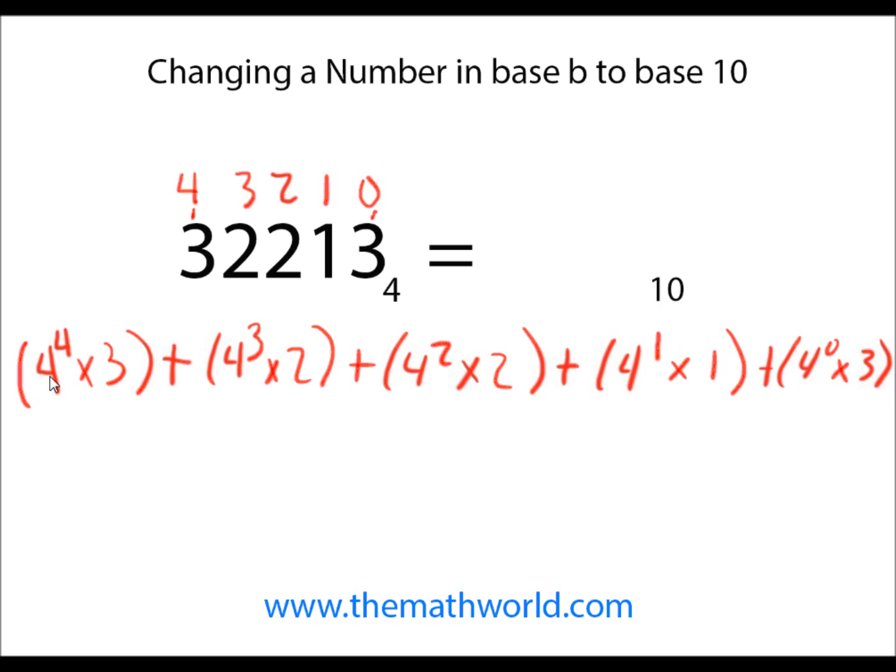So as we come through 4 to the 4th power, you can do 16 times 16, 64 times 4, whichever you would like, gives us 256. Multiply by 3 is going to give us 768.